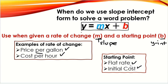For example, if you have a cell phone and you pay a flat rate of say $50 a month, and you incur additional costs for the minutes you use or if you go over a certain number of minutes — that would be the rate of change. That's a real-life situation of using slope-intercept form.